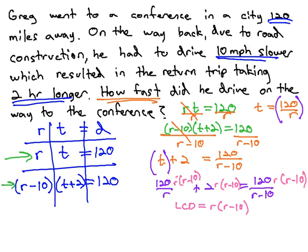And when we do, the R's divide out, we get 120 times R minus 10 plus 2 R times R minus 10 equals, when the R minus 10's divide out, 120 R.